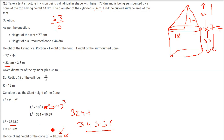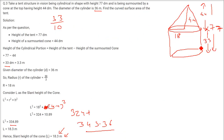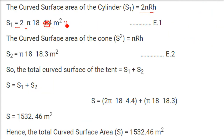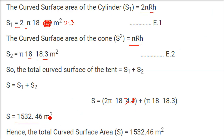The curved surface area of the cylinder is 2πRH with radius 18 and height 3.3. The curved surface area of the cone is πRL with R = 18 and L = 18.3. Adding these gives a total curved surface area of 1532.46 square meters.